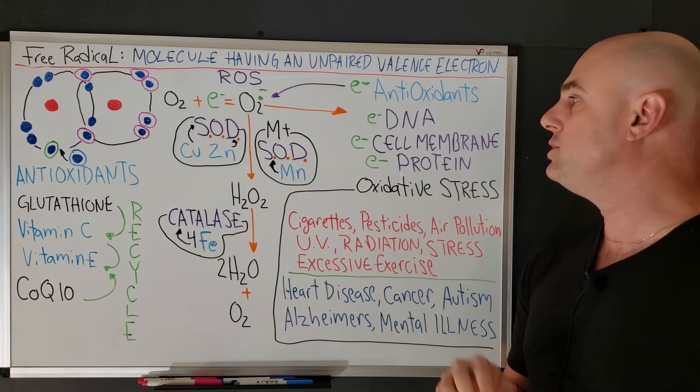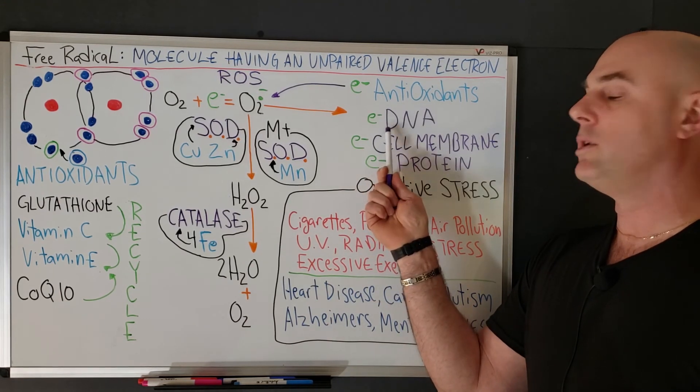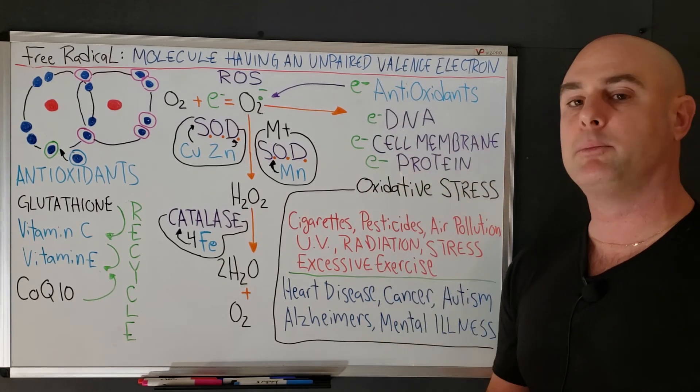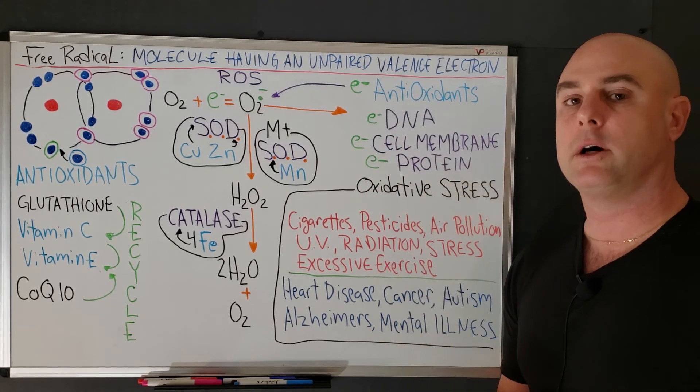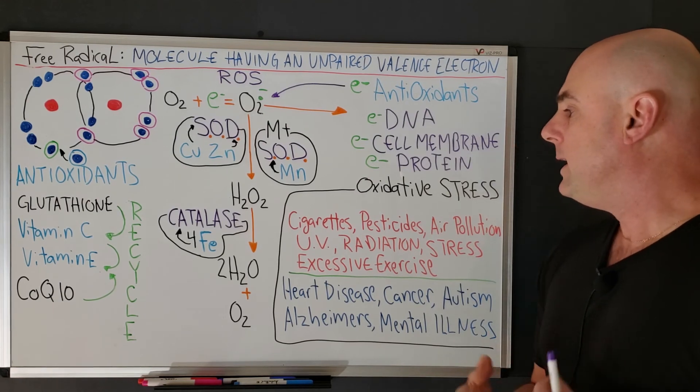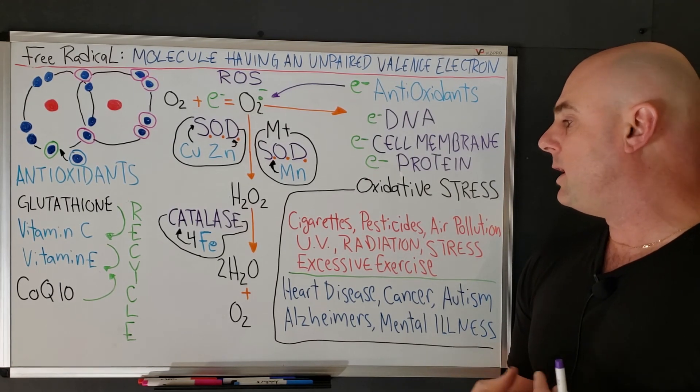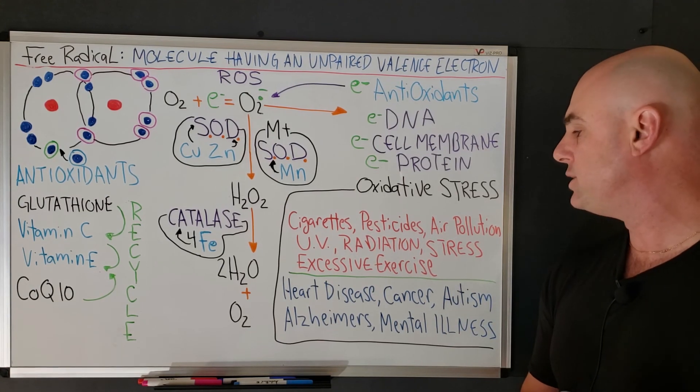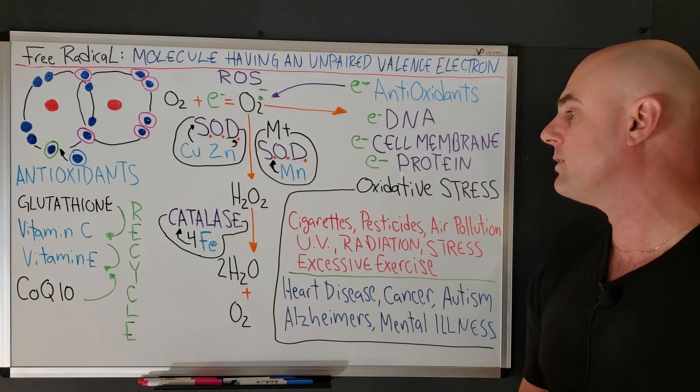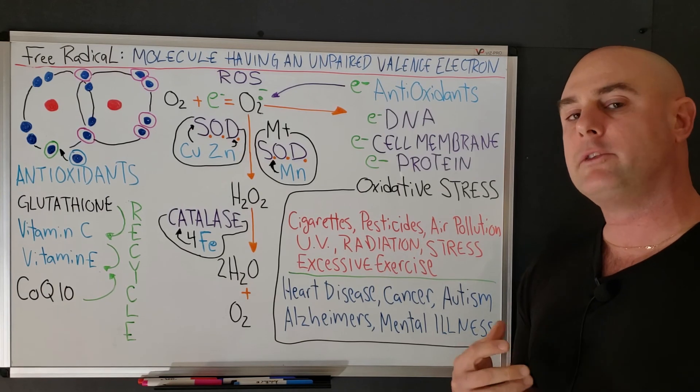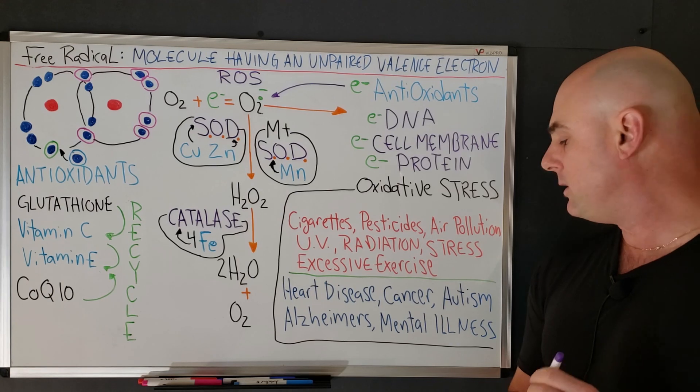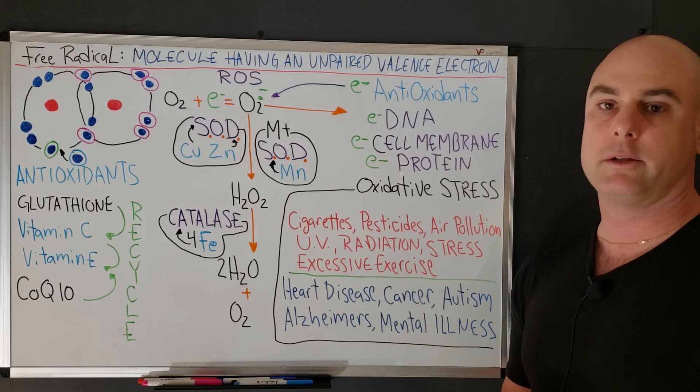If we aren't able to do that, these free radicals will aggressively try to pull electrons from our DNA, protein, and cell membranes, which leads to oxidative stress. Oxidative stress can be caused from cigarettes, pesticide, air pollution, UV, radiation, stress, and excessive exercise. The long-term consequences of oxidative stress can lead to heart disease, cancer, autism, Alzheimer's, and most mental illnesses.